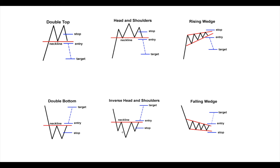The inverse head and shoulders is the same as head and shoulders except it's a bearish-to-bullish reversal — the mountain peak is now at the bottom but the same rules apply. The falling wedge as a reversal has two descending lines of support and resistance, with one descending much more steeply than the other. These are all reversal patterns you need to memorize. Remember: if they don't break the neckline, they are not a head and shoulders or double top. If lines aren't both ascending or both descending correctly, they're not wedges.